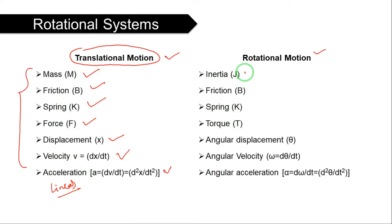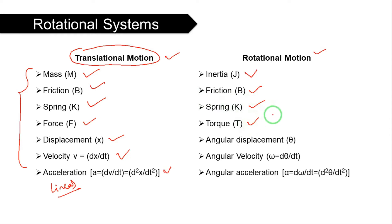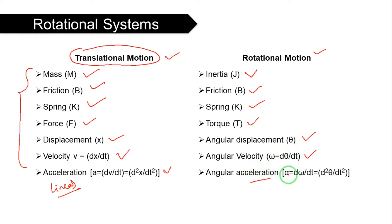Now coming to the rotational system: in place of mass we have the moment of inertia J, friction and spring remain, but in place of applied force we have applied torque, denoted tau or T. Instead of linear displacement, there is angular displacement theta. Angular velocity omega equals d-theta/dt, and angular acceleration alpha equals d-omega/dt, or d²theta/dt².